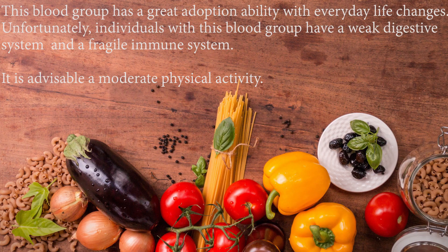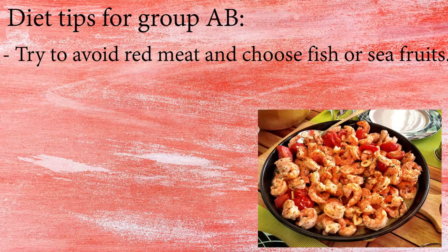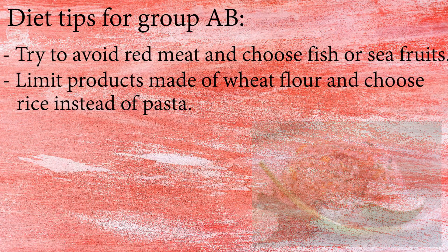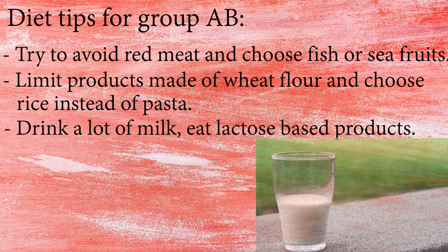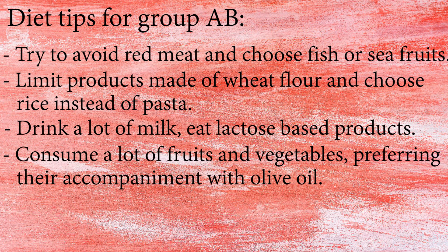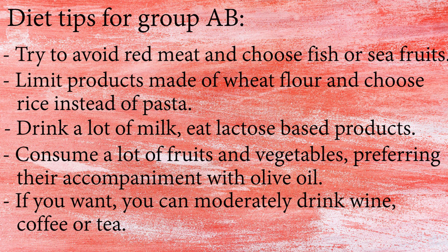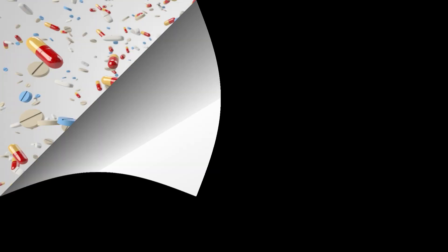Group AB has great adaptation ability to everyday life changes, but unfortunately individuals with this blood group have a weak digestive system and fragile immune system. Moderate physical activity is advisable. Diet tips: avoid red meat and choose fish or seafood; limit wheat flour products and choose rice instead of pasta; drink plenty of milk and eat lactose-based products; consume fruits and vegetables with olive oil; and moderately drink wine, coffee, or tea.